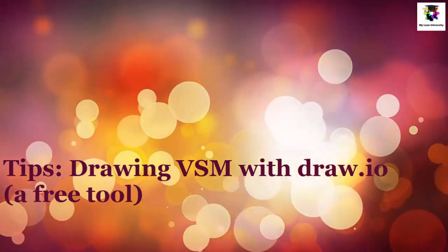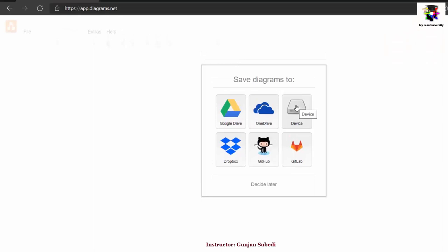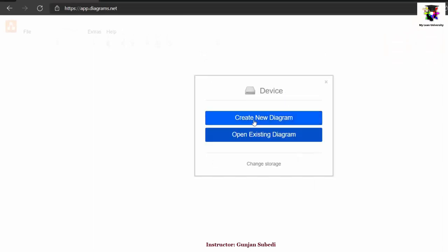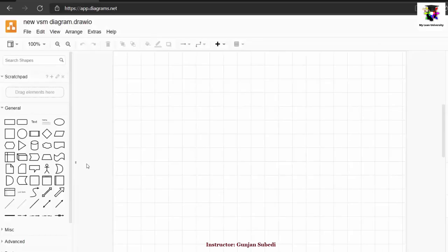So first of all, I am going to log inside draw.io and suppose I am going to save the diagram to device. I am trying to create a new diagram. Let me put a name in it, New VSM Diagram. I have a panel for drawing the value stream map.